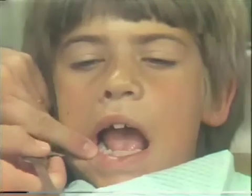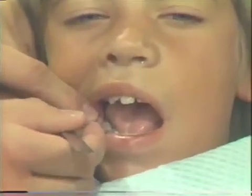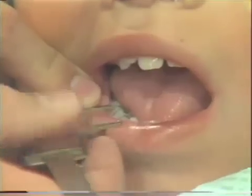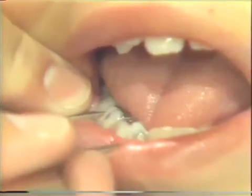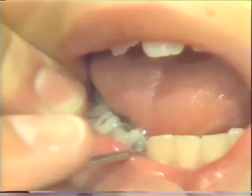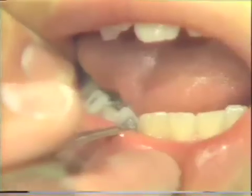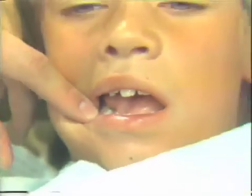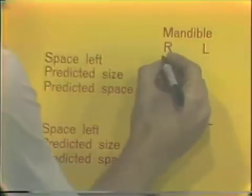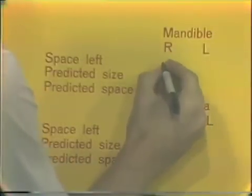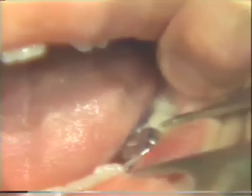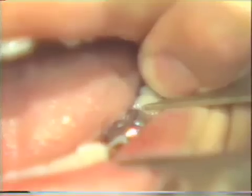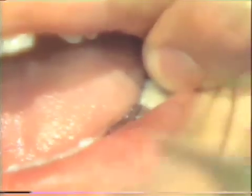For our patient, we place the Bowley gauge tips at the mesial of the first permanent molar. Remembering the point — in this case on the primary cuspid — we find the space available in our patient's mouth is 24.3 millimeters on the right side. On the left, this same measurement is 21.2 millimeters.